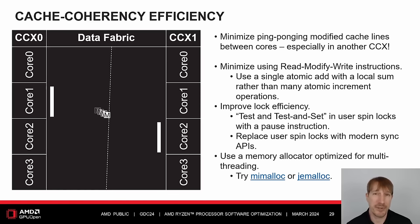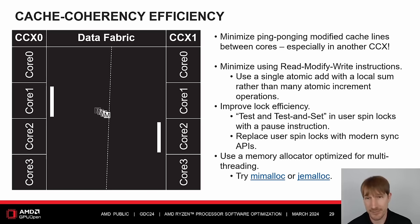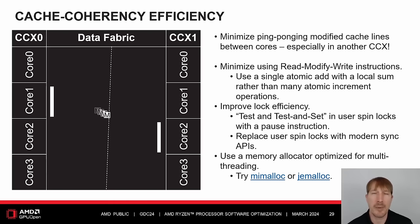Minimize ping-ponging modified cache lines between cores, especially in another CCX. Here are a few tips. One, minimize using read-modify-write instructions — use a single atomic add with a local sum rather than many atomic increment operations. Two, improve lock efficiency: test and test-and-set in user spin locks with the pause instruction — this is especially important for Zen 1-based processors — or replace user spin locks entirely with modern sync APIs. Three, use a memory allocator optimized for multi-threading. The memory manager is a big repeat offender for contention of locking primitives. Try mimalloc or jemalloc.